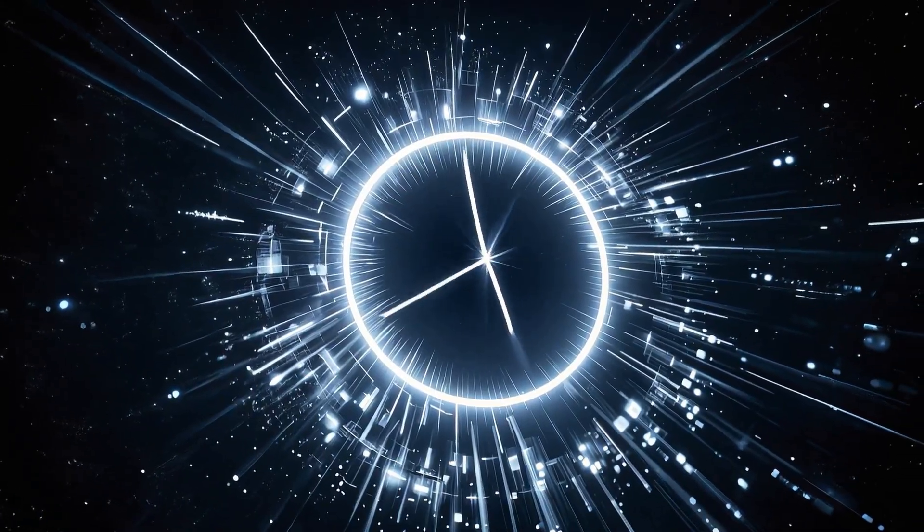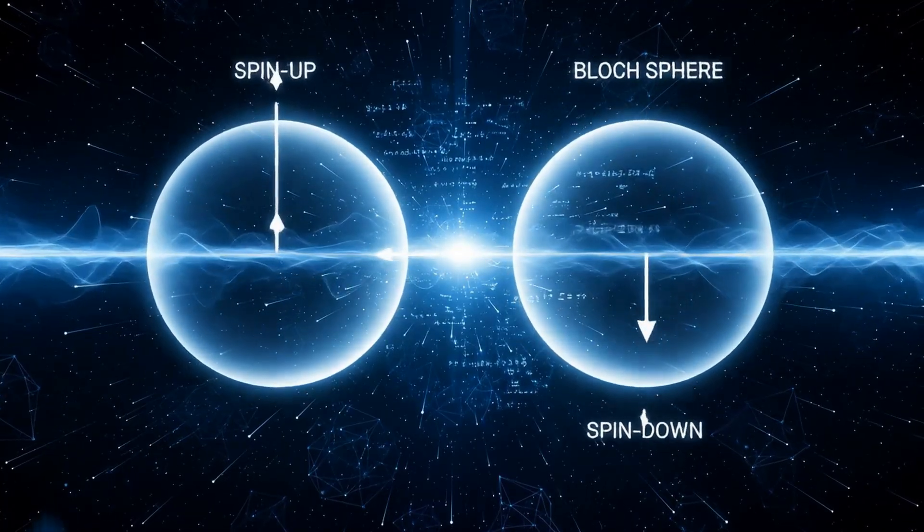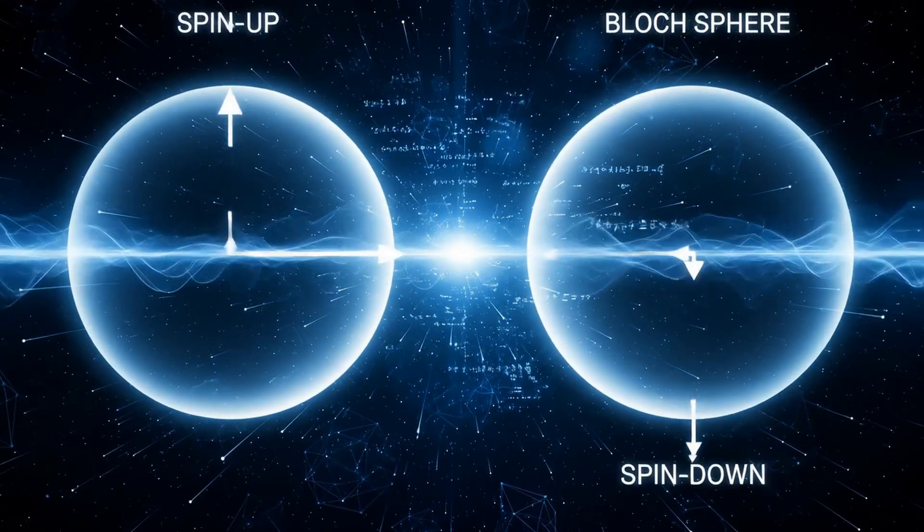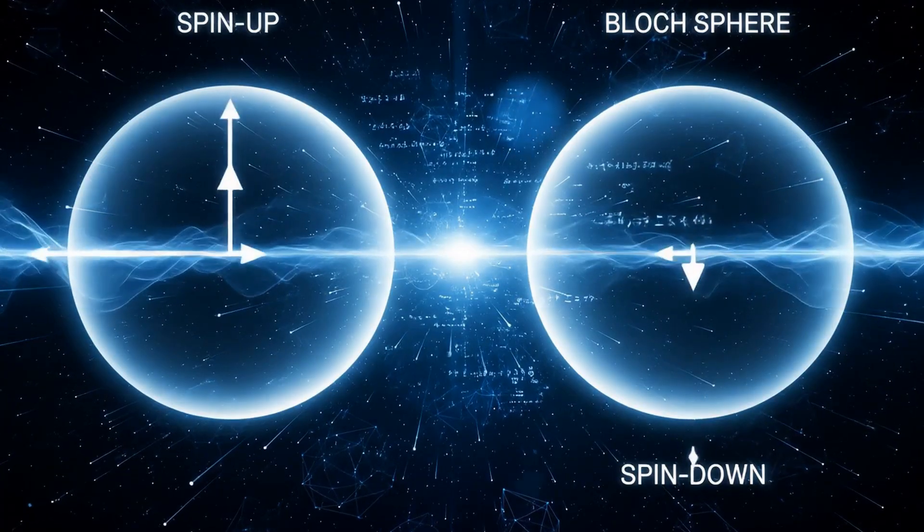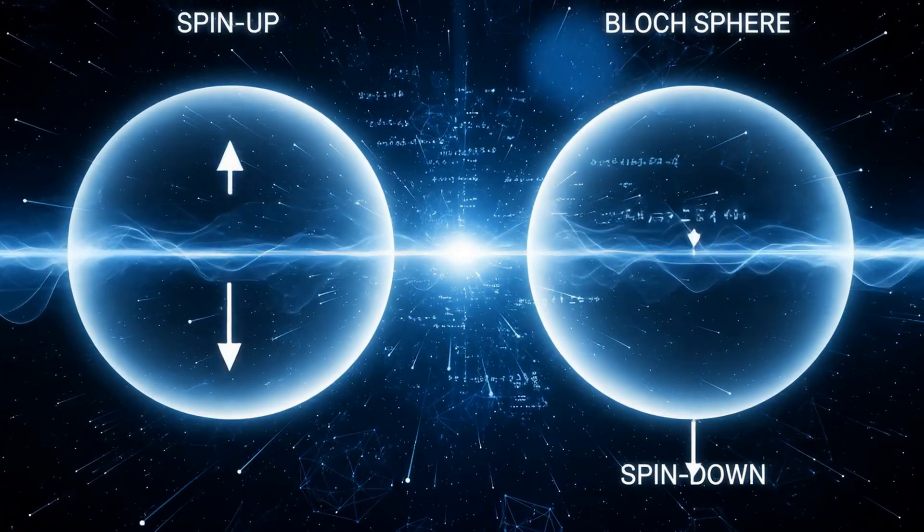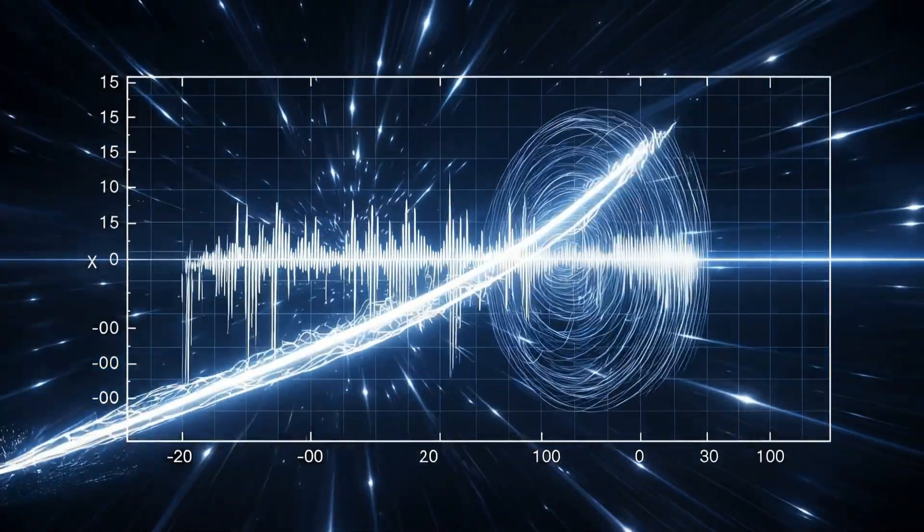If the vector aligns with the qubit's axis, we see a 1. If it is opposite, we see a 0. But most of the time, it is somewhere in between. That in between is probability.